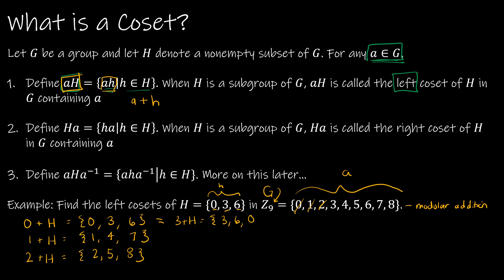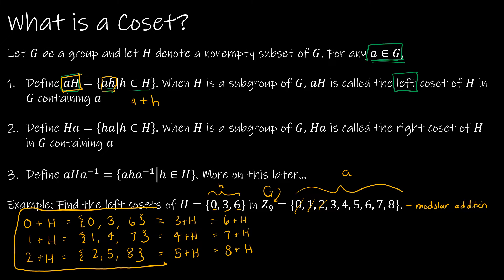That's the exact same set as 0 plus H. Similarly, 4 plus H gives the same elements as 1 plus H, 5 plus H is the same as 2 plus H, and 6, 7, and 8 plus H are also duplicates. So there are only three distinct cosets: 0 plus H, 1 plus H, and 2 plus H.